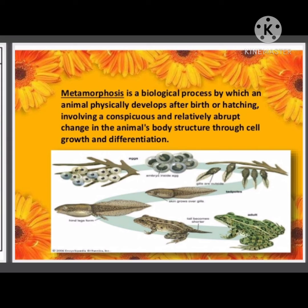In the case of the frog, the egg hatches into a tadpole or larva, and again that becomes the adult. This process is called metamorphosis. The transformation of the larva into an adult through drastic changes is called metamorphosis.